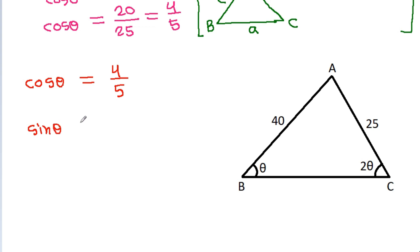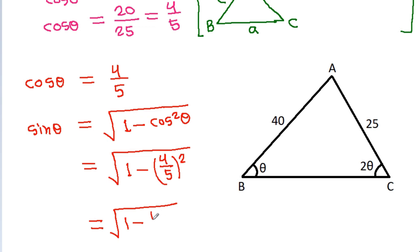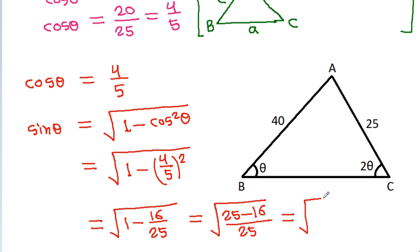Now we find sine theta. Sine theta equals the square root of 1 minus cos squared theta, which equals square root of 1 minus (4/5) squared, equals square root of 25 minus 16 divided by 25, equals square root of 9 by 25, which is 3 by 5.